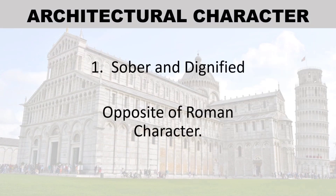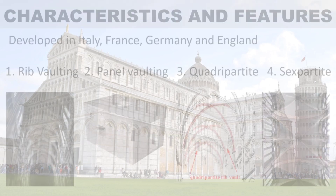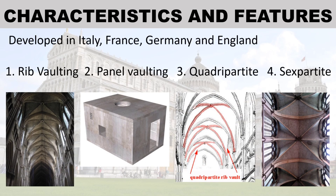Architecture character: Sober and dignified — it is the opposite of Roman character. Characteristics and features were developed in Italy, France, Germany, and England. These include: number one, rib vaulting; number two, panel vaulting; number three, quadripartite; and number four, sexpartite.